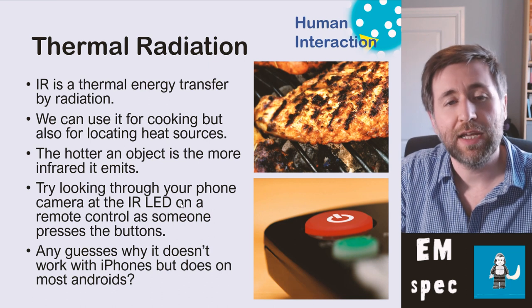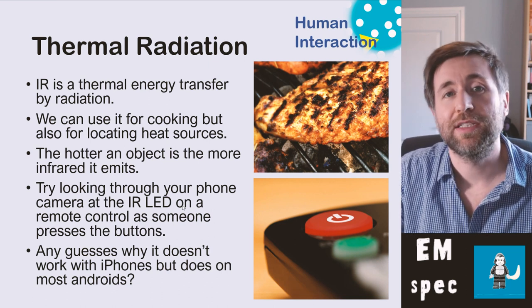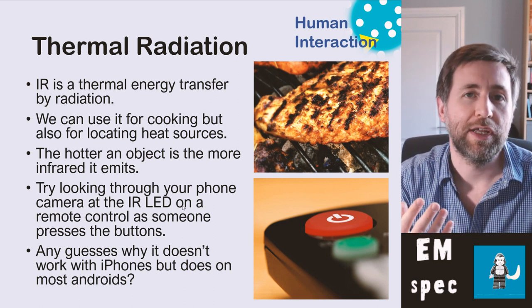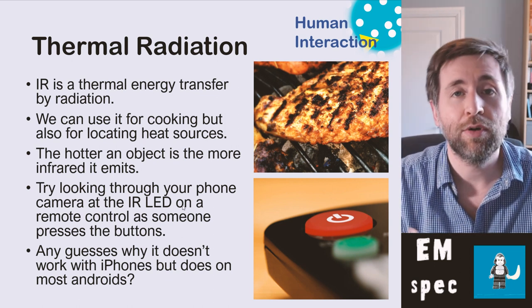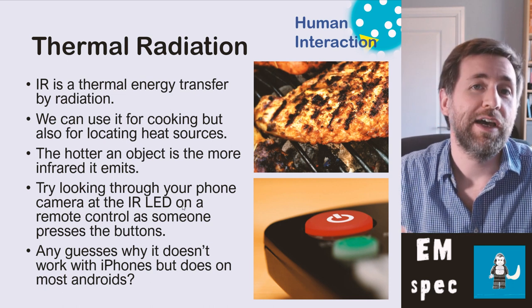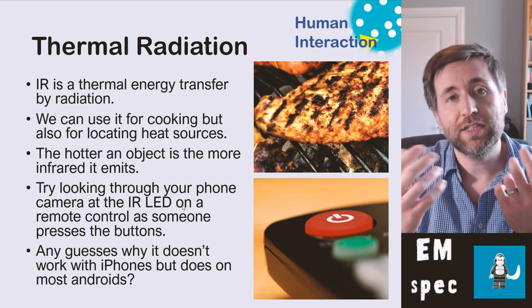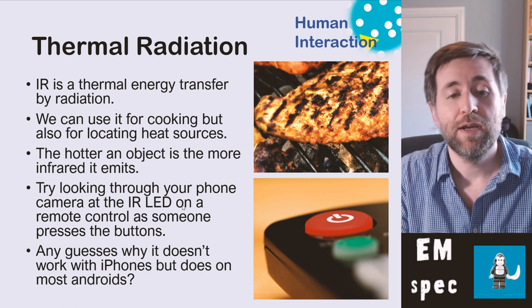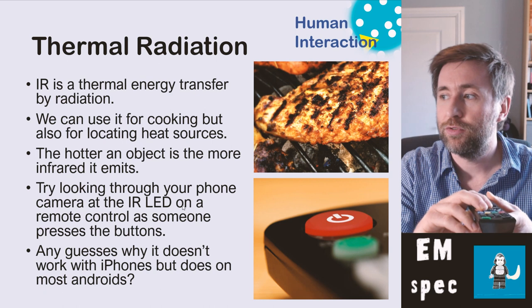Infrared is thermal energy transferred by radiation. It's a bit more red than red — a longer wavelength form of red light — and it's the type of electromagnetic radiation that carries heat. Hot objects emit infrared radiation. For example, that's how a grill works — there's no contact, no conduction or convection involved in heating with a grill. There is just transmission of heat by infrared.